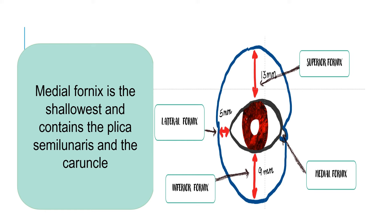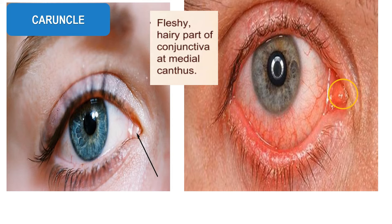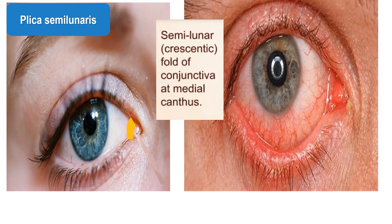The medial fornix contains two structures: the plica semilunaris and the caruncle. Measured from the limbus, the conjunctival sac dimensions are superiorly 8–10 mm, inferiorly 8–10 mm, laterally 14 mm, and medially about 7 mm — again the least. The caruncle is a fleshy part of the conjunctiva at the medial canthus that sometimes has hair growing on it. The plica semilunaris is a crescentic fold of conjunctiva situated slightly lateral to the caruncle, still at the medial canthus.